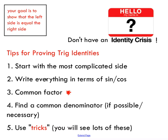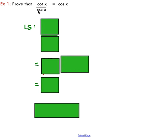So you remember the first step I told you is to start with the most complicated side. Arguably cotangent over cosecant is more complicated than cos. So I'm going to focus on the left-hand side. That's what this LS refers to here.